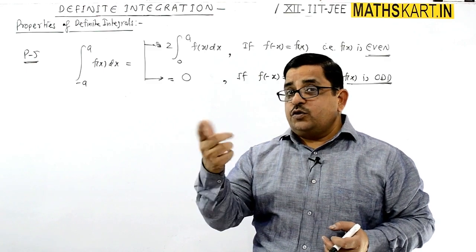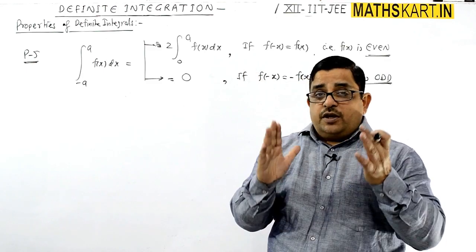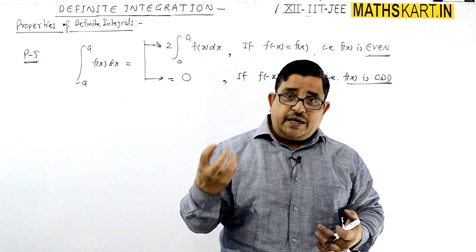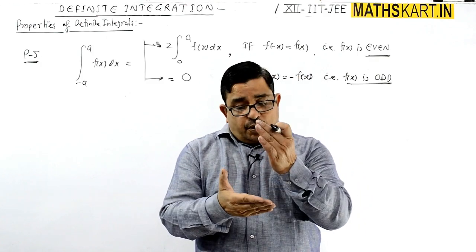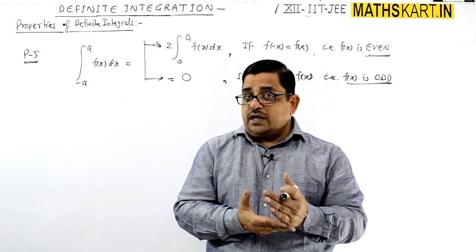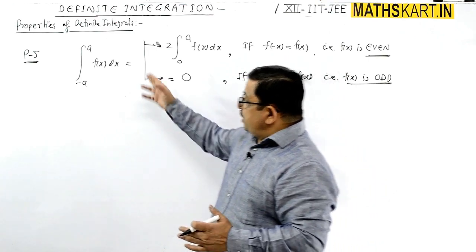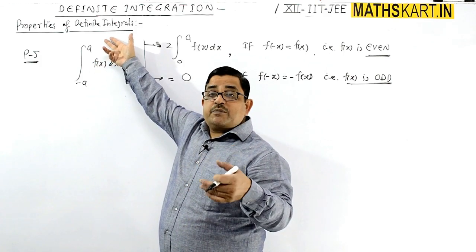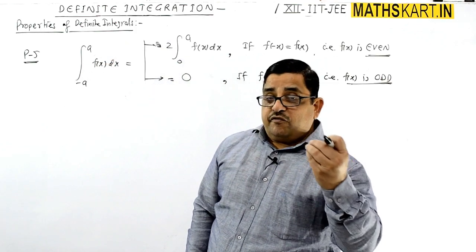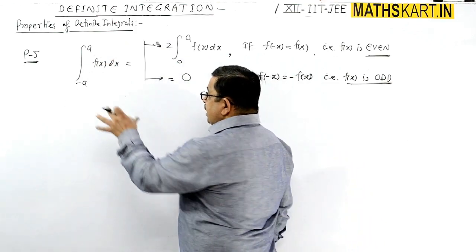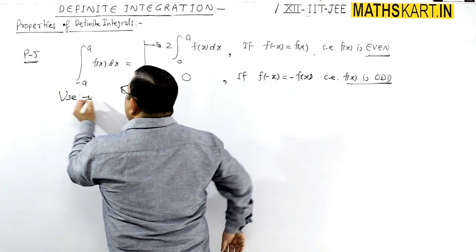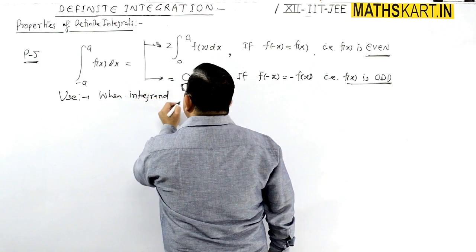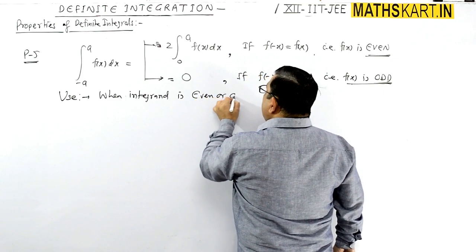The limit will be 0 to a, and 2 times of that. The main thing is that when we see properties in use, we can detect how to apply the property. In particular, when the lower limit is negative and the upper limit is the same positive value, Property 5 can definitely be used. The basic use of Property 5 is when the integrand is even or odd.